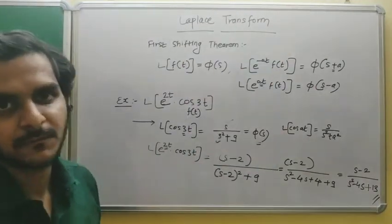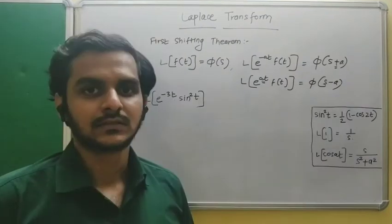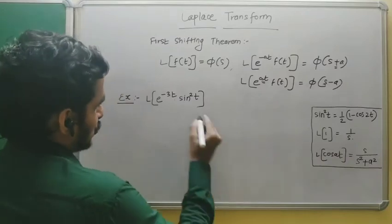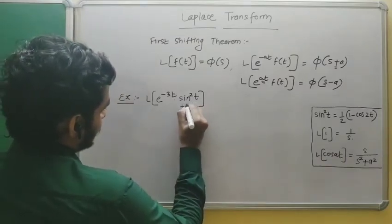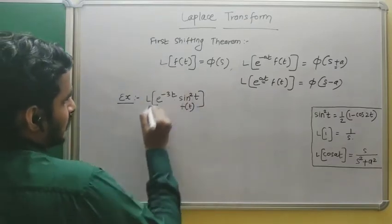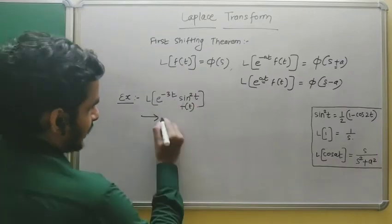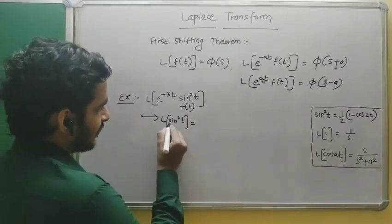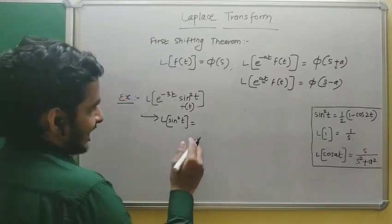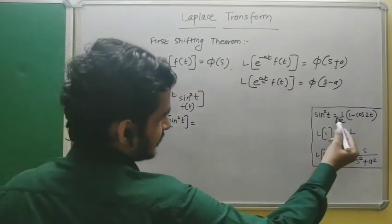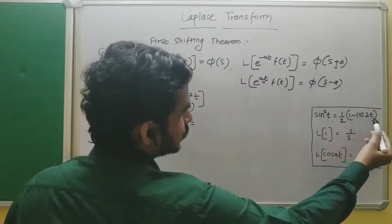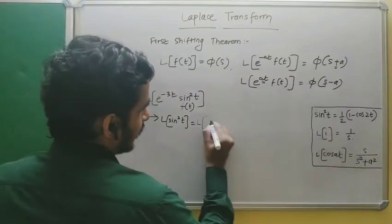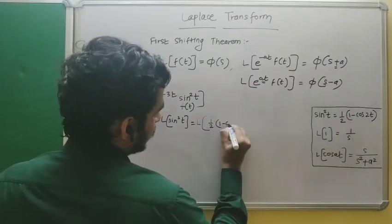Now let's move to the next example. Find the Laplace transform of e^(-3t)·sin²(t). Like the previous example, we assume f(t) = sin²(t). In the first step, find the Laplace transform of f(t) = sin²(t). We don't have a direct formula, so we use the trigonometric identity: sin²(t) = (1/2)(1 - cos(2t)).